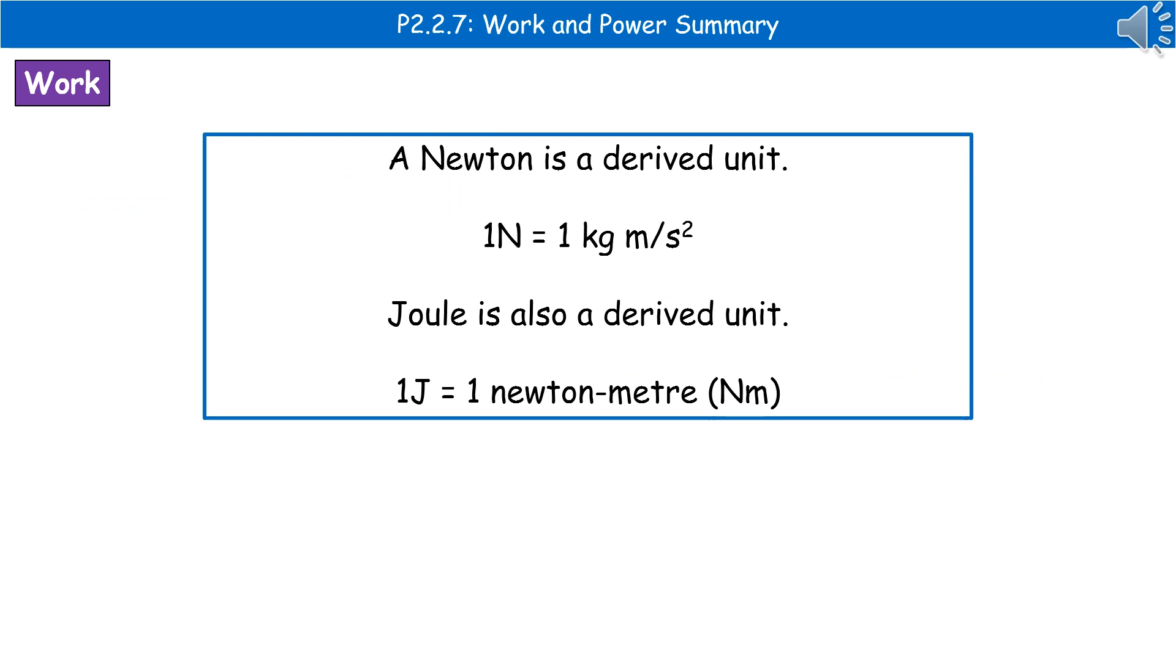One thing to bear in mind when we're talking about these units, a newton is a derived unit. Remember one newton is one kilogram meter per second squared. When we're talking about joules, they are also derived units, and one joule is the same as one newton meter.